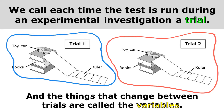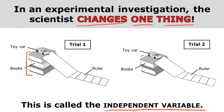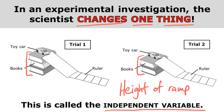The things that change between trials are called the variables. In an experimental investigation, the scientist changes one thing, and only one thing, and this is called the independent variable. You can see in trial one that there are three books, while in trial two there are only two books. But the scientist is not investigating how the number of books affects the motion of the car — by adding or removing books, the scientist is affecting the height of the ramp. So that is really what is being changed. Adding and removing books means that we've changed the height of the ramp.